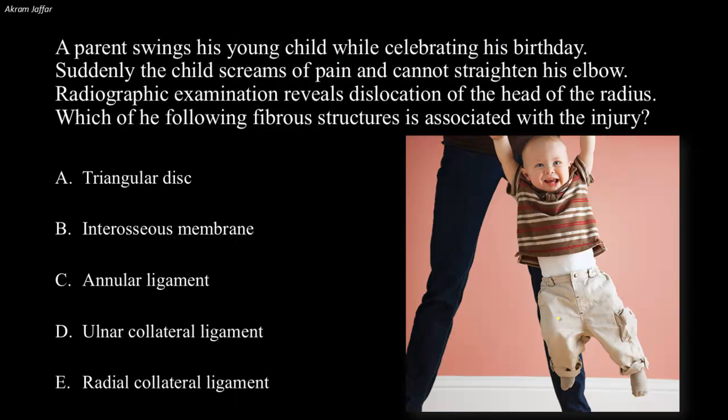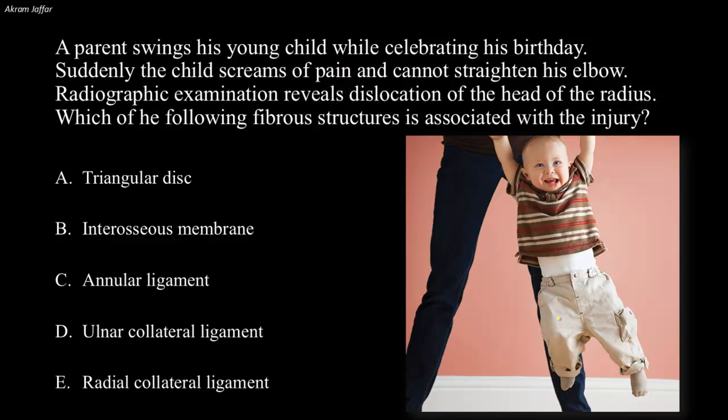A parent swings his young child while celebrating his birthday. Suddenly, the child screams of pain and cannot straighten his elbow. Radiographic examination reveals dislocation of the head of the radius. Which of the following fibrous structures is associated with the injury?